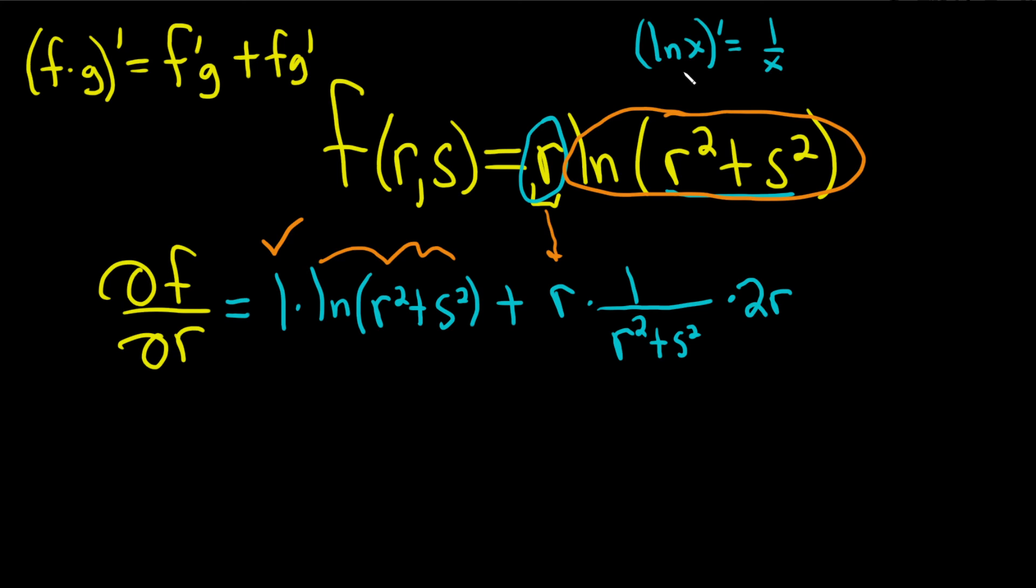So again, the derivative of ln x is 1 over x. So here it's 1 over this stuff, and then times the derivative of the inside. So for r squared, we get 2r, just using the power rule. And then the derivative of s squared is 0 because we treat s as a constant.